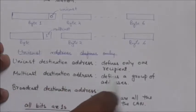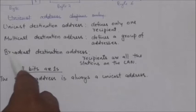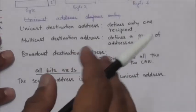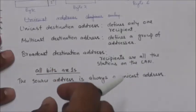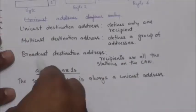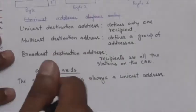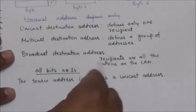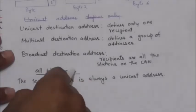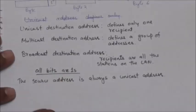The broadcast destination address is a special case of the multicast address. In a broadcast, the recipients are all the stations of the LAN. In the broadcast destination address, all bits are ones.